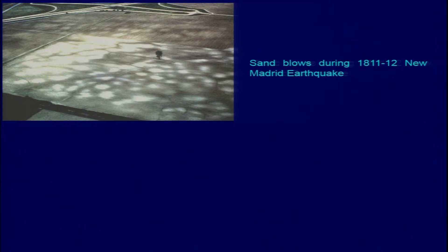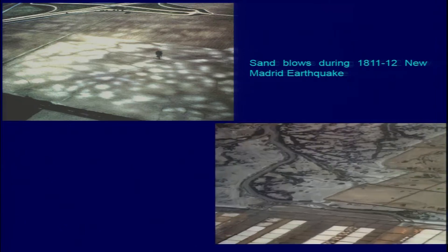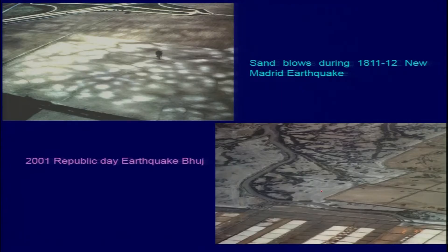These are pictures from New Madrid — earthquakes which were triggered in 1811 and 1812 in the US. And this is an aerial photograph which we took after the 2001 Bhuj earthquake in the Gandhidham area.